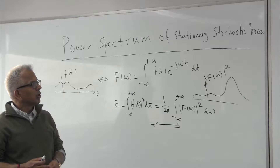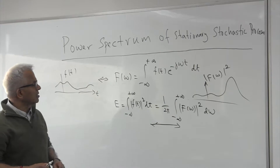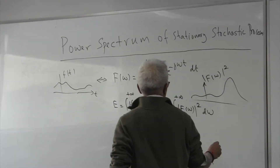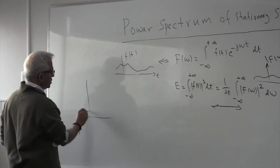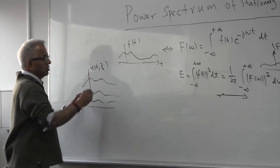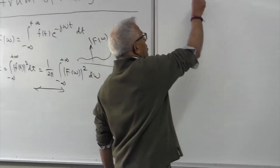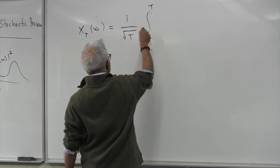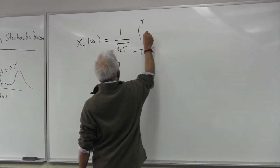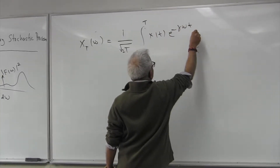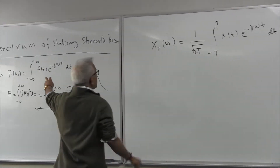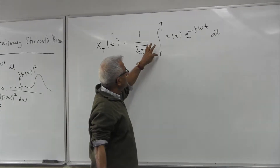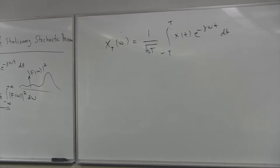Now the question is how do you define it for a stochastic process. Let me sort of start copying this from the deterministic case. For each realization — remember, for a stochastic process I have multiple realizations — let me define a property like this curve. So I took one sample realization and I took the transform of this. But rather than doing it from minus infinity to plus infinity, I'm going to do it over a segment.